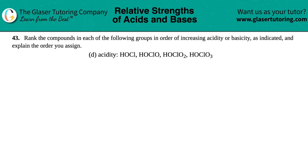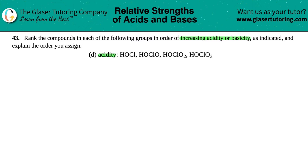Number 43. Rank the compounds in each of the following groups in order of increasing acidity or basicity as indicated and explain the order you assigned. For letter D, we have to rank in terms of increasing acidity of HOCl, HOClO, HOClO2, and HOClO4.